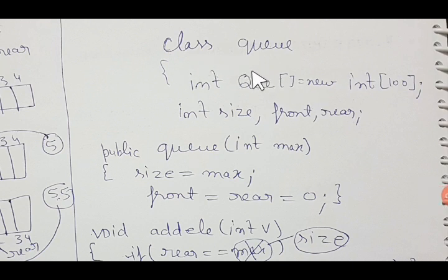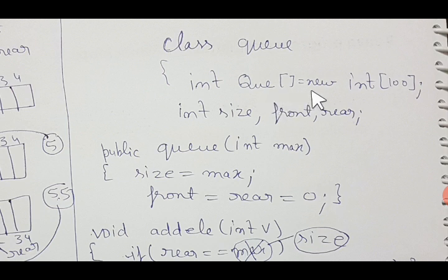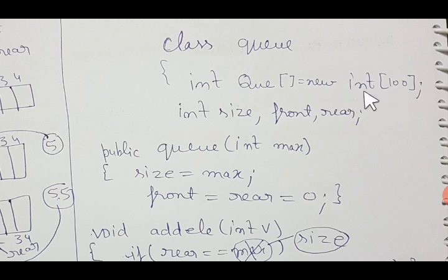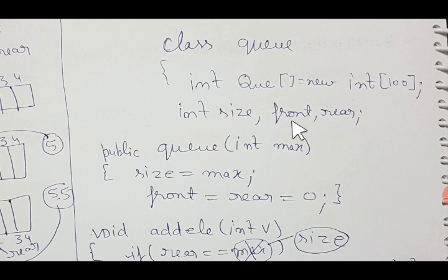As per the question, the class name is Q. First we write the data members: Q, size, front, and rear — the normal requirements of any Queue. We create the array to store queue elements: int Q[] = new int[100], since 100 was the maximum size. We have given size also, so the array is declared and memory allocated. Then we declare the variables size, front, and rear — size holds the value or size you decide for your Queue.